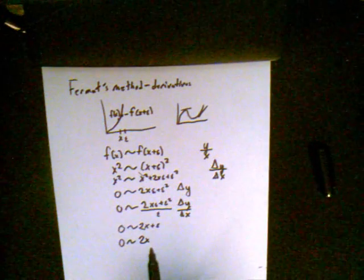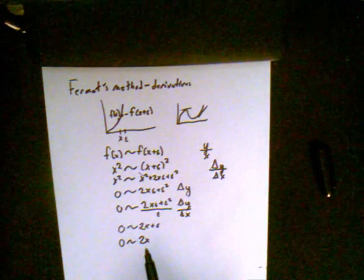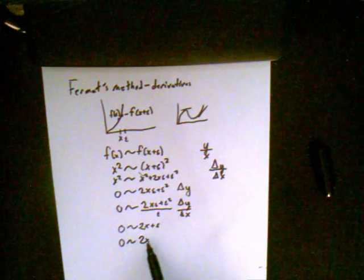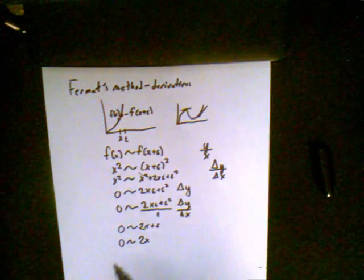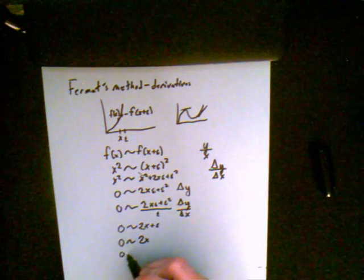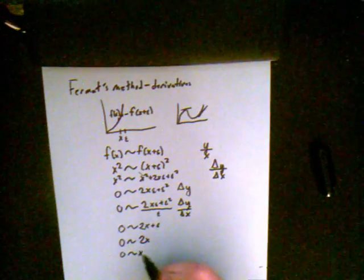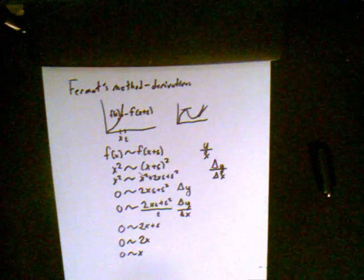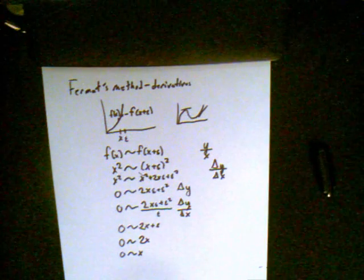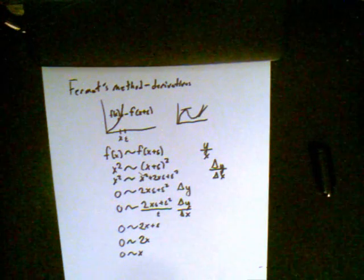And if we want to find the minimum or maximum value, the critical point here, we can just divide through by 2, right? So, 0 is adequal to x because that solves the equation. And so, at 0, which makes sense on this, right? 0 is the minimum value. We have a critical point.